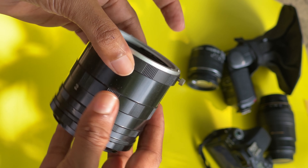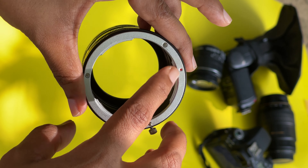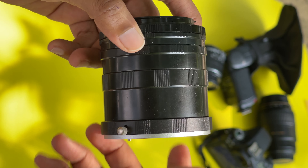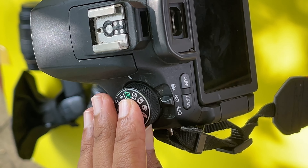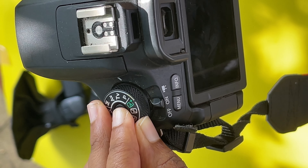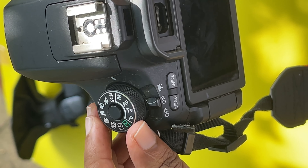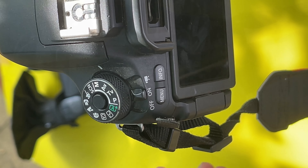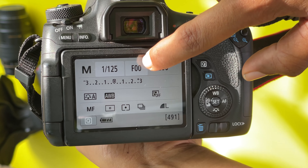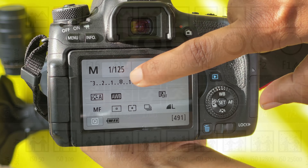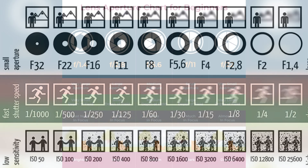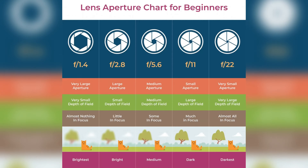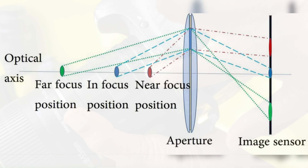This video is dedicated to electronic contact points and the macro extension tube. If you want to use the extension tube, you can use manual focus mode and manual mode. You can also use the depth of field with the extension tube.